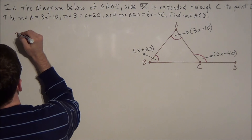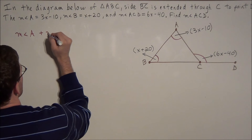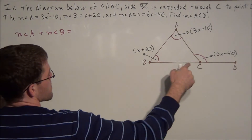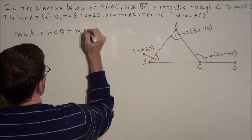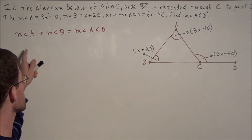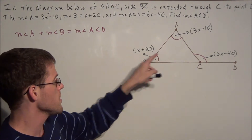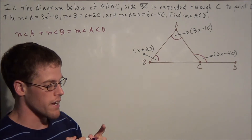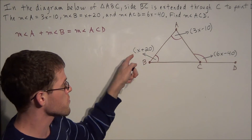We can set up the equation: the measure of angle A plus the measure of angle B equals the measure of angle ACD. This is how we apply the exterior angles theorem — the sum of the two non-adjacent interior angles, angle A and angle B, set equal to the exterior angle ACD.